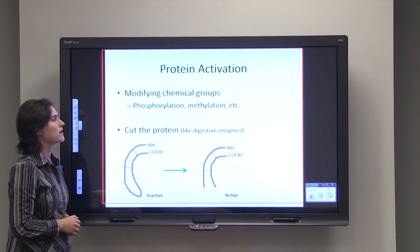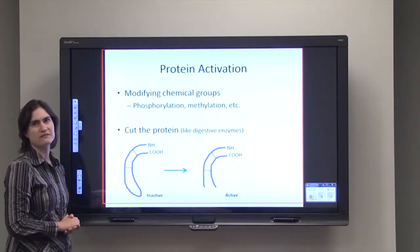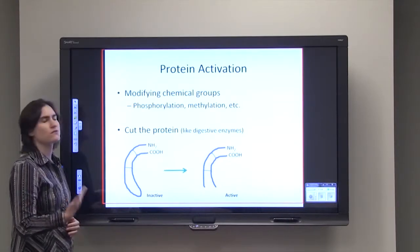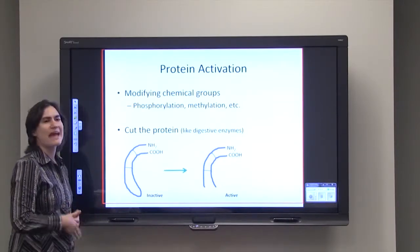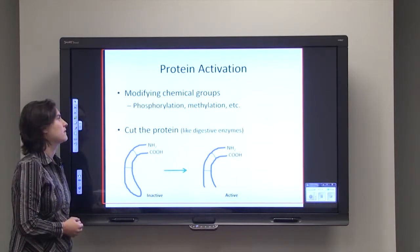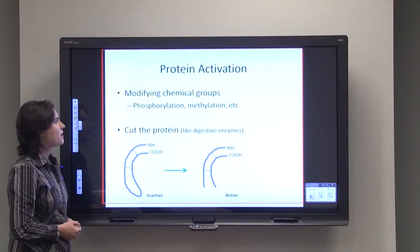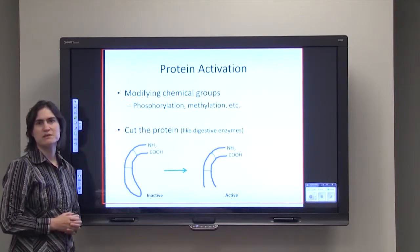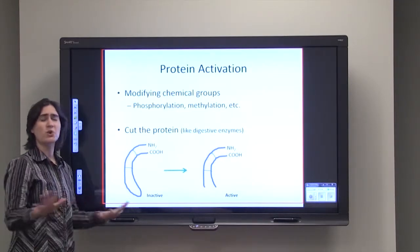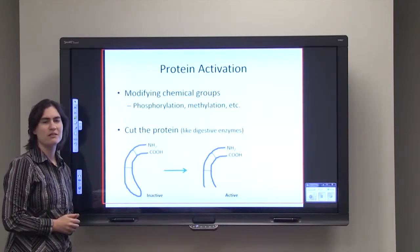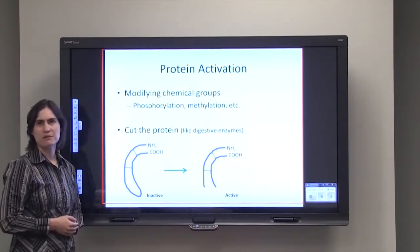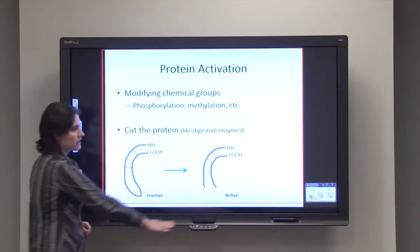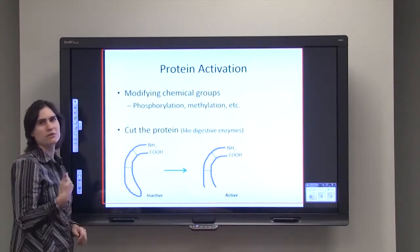One of the last places that you can regulate gene expression is through protein activation. Some proteins require modifying chemical groups — maybe a phosphorylation, methylation, or other additions — to make them active. Other proteins require the initial protein to be cut before it's active. A good example is digestive enzymes: when first made, you don't want them active digesting the cell, but once they've gotten to the right place at the right time, you can cut that protein into its active form.